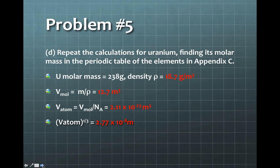For uranium, considering a molar mass of 238 grams and a density of 18.7 grams per cubic centimeter, we get a molar volume of 12.7 cubic centimeters and an atomic volume of 2.11 times 10 to the minus 23 cubic meters. The atom-to-atom distance is estimated to be 2.77 times 10 to the minus 8 meters.